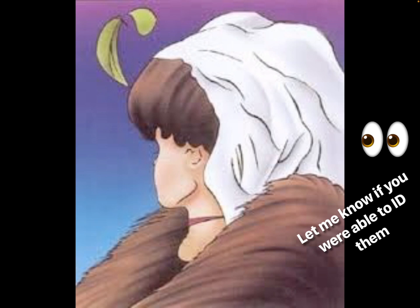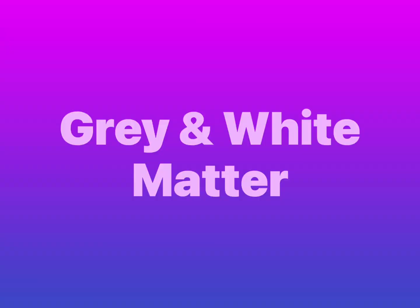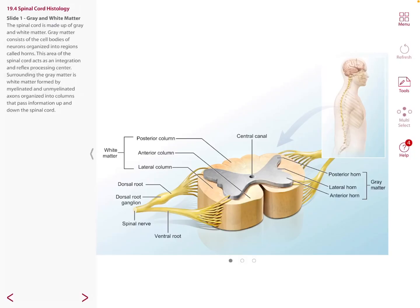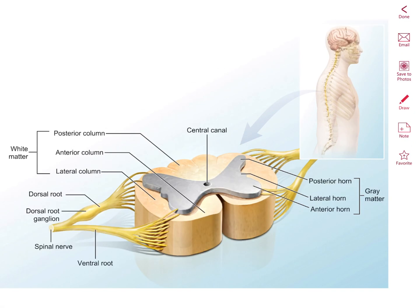The internal anatomy of the spinal cord allows sensory and motor information to be processed in an organized way. The spinal cord is made up of gray and white matter. Gray matter consists of cell bodies of neurons organized into regions called horns. This area of the spinal cord acts as an integration and reflex processing center. We have the posterior horn, lateral horn, and anterior horn.